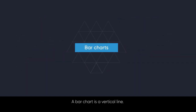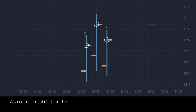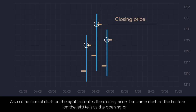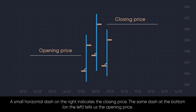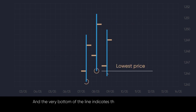A bar chart is a vertical line. The very top of it shows the highest price during the day. A small horizontal dash on the right indicates the closing price. The same dash at the bottom, on the left, tells us the opening price. And the very bottom of the line indicates the lowest price for the day.